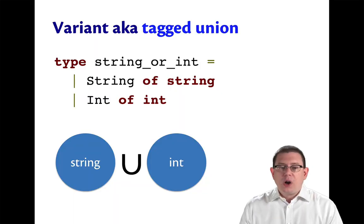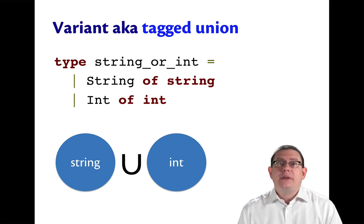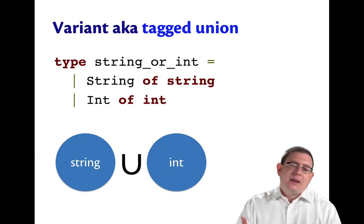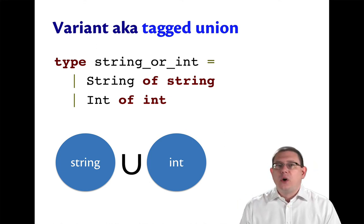But there's a little more going on to it than that. It's not just a union because the constructor name or the tag tells us which set that the value came from. In the case of the type we're looking at here, you can kind of tell already which set it came from because they're two different sets. Strings are not the same thing as ints.